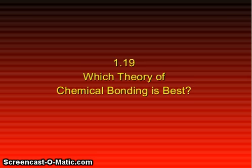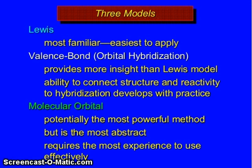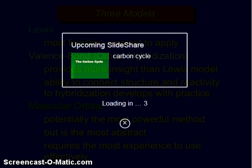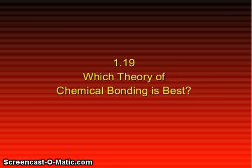Which theory of chemical bonding is best? Lewis structures are most familiar and easiest to apply. Valence bond orbital hybridization provides more insight than the Lewis model; ability to connect structure and reactivity to hybridization is developed with practice. Molecular orbitals are potentially the most powerful method but are the most abstract, requiring the most experience to use effectively. Hope this video will be helpful to you. If you like this video, please subscribe to my channel — thanks for watching.